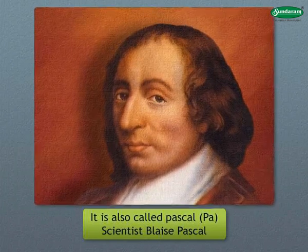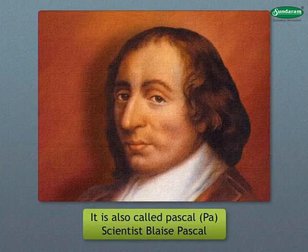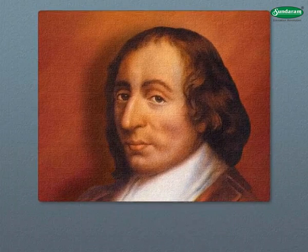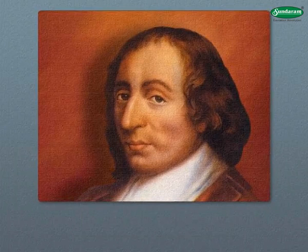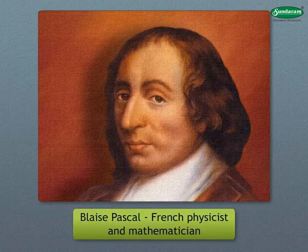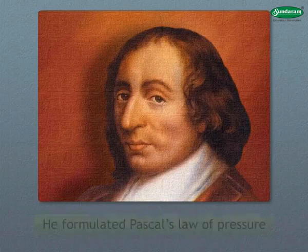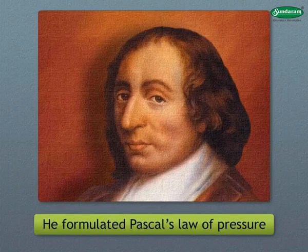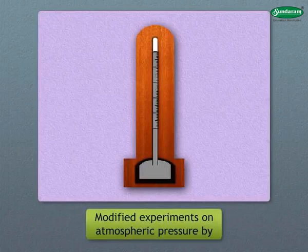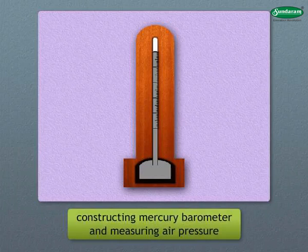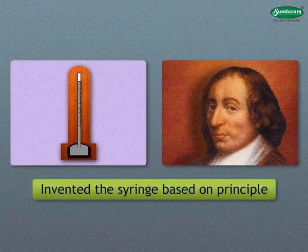Blaise Pascal was a French physicist and mathematician. He formulated what came to be known as Pascal's law of pressure. He modified experiments on atmospheric pressure by constructing a mercury barometer and measuring air pressure. He also invented the syringe based on the principle that came to be known as Pascal's law.